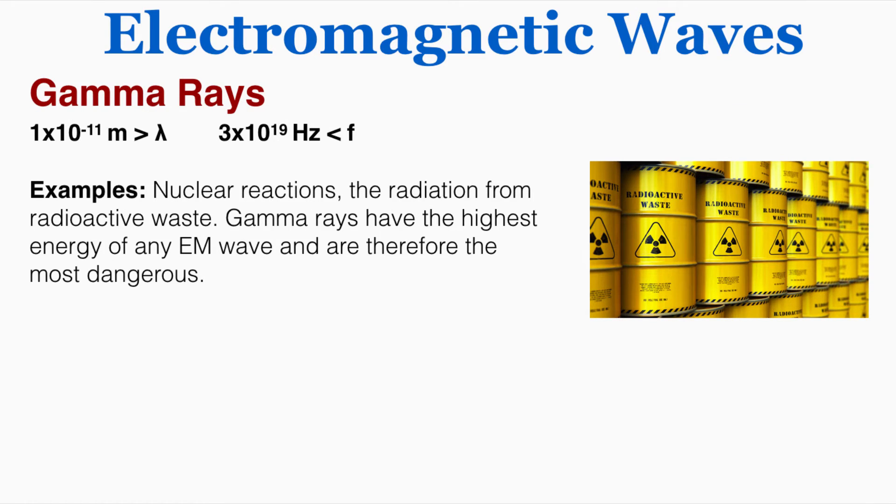Finally, gamma rays are the highest frequency, lowest wavelength type of EM wave, and therefore they're the most dangerous. They only really come from nuclear reactions and the radiation from radioactive material. Gamma rays have the highest energy of any EM wave and are therefore the most dangerous. So if you've ever heard people talk about radiation specifically, they're usually actually talking about gamma rays radiated off of radioactive material.